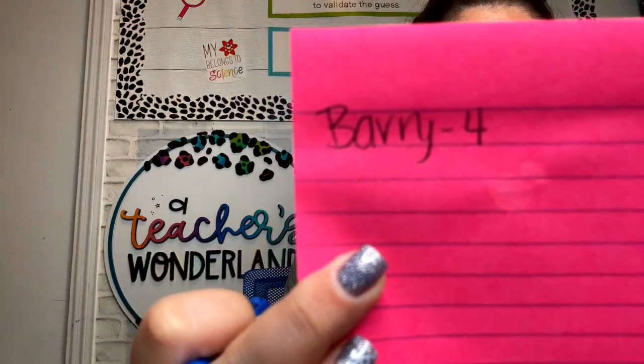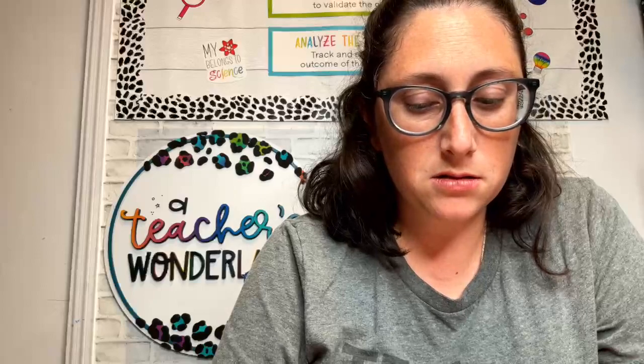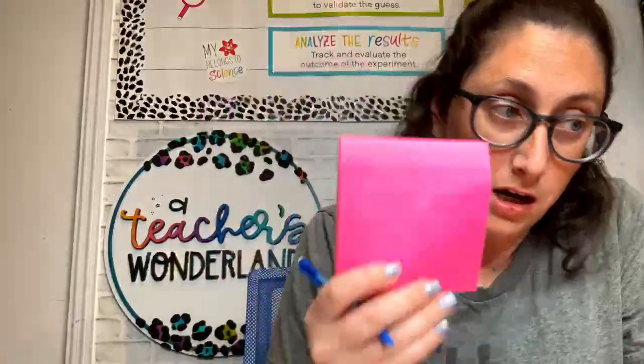I would literally just do it like that: Barry, four. If you really want to get detailed, you can put your fours on one post-it note, your threes on another post-it note, your twos on another, and just keep them separate.